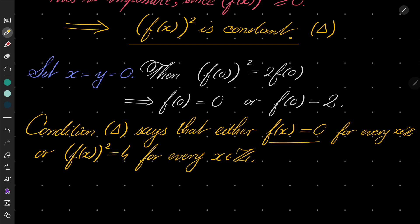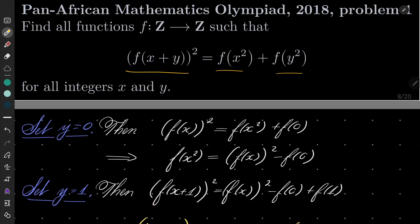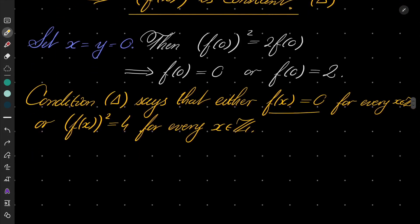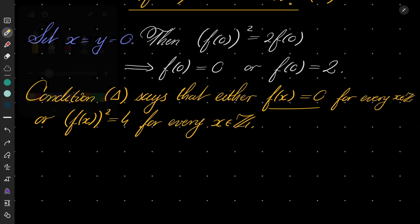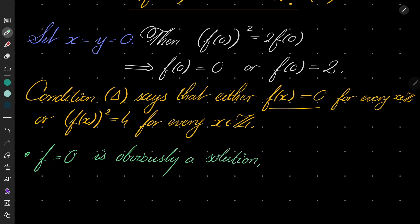The function which is constantly zero is obviously a solution — let's take a glance: zero equals zero plus zero, no problem there. So f which is constantly zero is one solution.